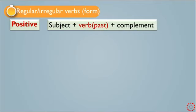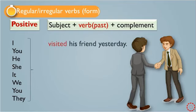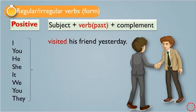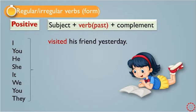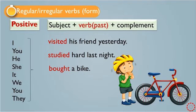For the positive form, at the beginning we have subject, then we have the verb in past form, and then the complement. There is no classification as in present simple — after the subject we have the main verb in past form. For example: 'He visited his friend yesterday,' 'She studied hard last night,' and 'I bought a bike.' Note the verbs here: visited, studied, and bought.